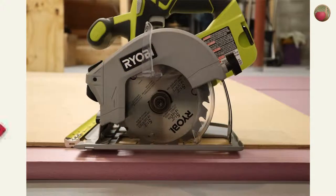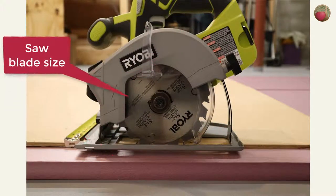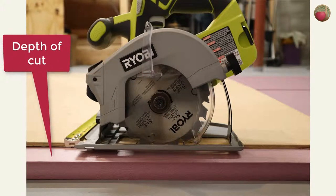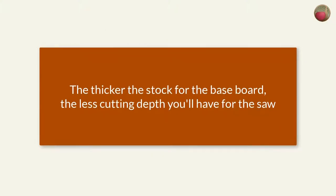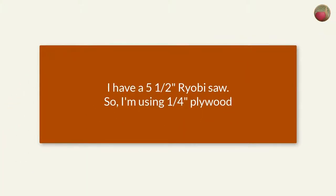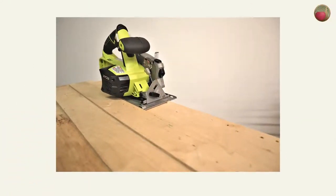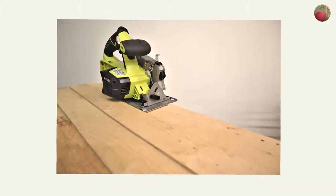Now, the first thing to consider is the thickness of the wood that you want to use. It needs to be based on the size of your circular saw blade and the depth of wood you'll be cutting when you use the guide. The thicker the stock you use for the baseboard, the less cutting depth you'll have for the saw. Now, for my five and a half inch Ryobi circular saw, I chose to use one quarter inch plywood for both boards. Now, that means my guide will be a bit flexible compared to thicker wood, but the glue up makes it sturdy enough.